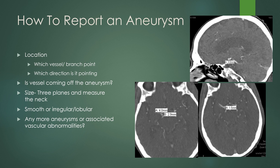When reporting an aneurysm, always discuss the location — which vessel, which branch point, and which direction it's pointing (anterior, posterior, superior, inferior, medial, or lateral). Note whether a vessel is coming off the aneurysm, which part it arises from, and which vessel it is. Always measure the aneurysm size in three planes and measure the neck separately if possible. Describe whether the wall is smooth, irregular, or lobular, and always look for multiple aneurysms. Note any associated vascular abnormalities such as AVM, DVA, or a mass in the case of an oncotic aneurysm.